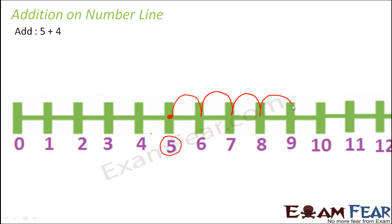Now I want to add 4 to 5, so I will make 1, 2, 3 and 4 jumps. After the fourth jump, where do I reach? I reach 9.